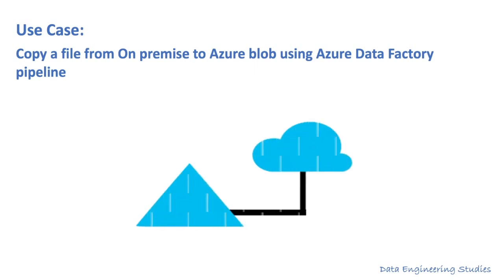Before we get into the details, let's see what is an OnPrem system. An OnPrem can be a virtual network or your local computer. The objective is to load this file to the cloud. In our case, we are loading this file to Azure Blob Storage.